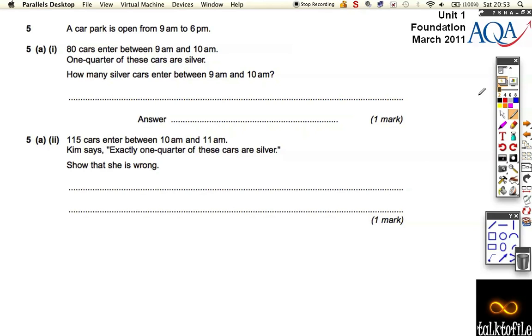Okay, question 5 on this March 2011 paper. We're told a car park is open from 9 to 6. 80 cars enter between 9 and 10. One quarter of these cars are silver. How many silver cars are there between 9 and 10?